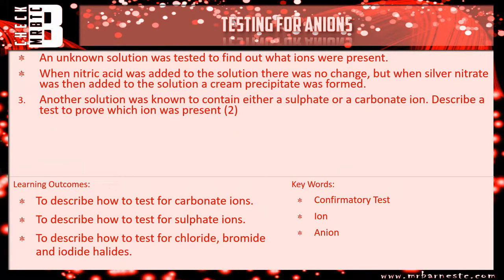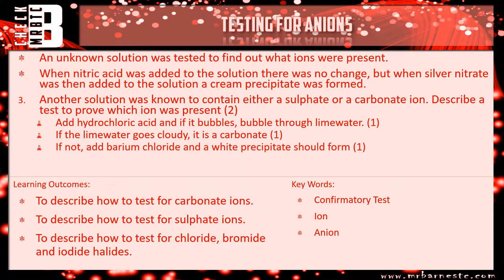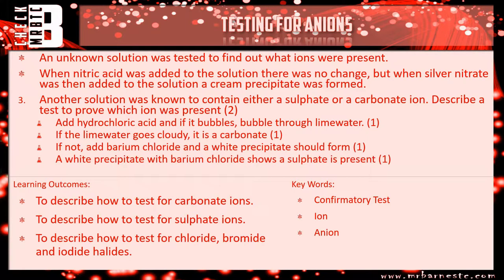On to question three. Another solution was known to contain either a sulfate or a carbonate ion, so what we could do is start off by adding hydrochloric acid. If it bubbles you're pretty sure it's going to be a carbonate, but what you need to do is bubble it through lime water — that gets you one mark. If the lime water goes cloudy it's a carbonate ion. Then talk about what happens if it doesn't: add in your barium chloride and you should get a white precipitate. If you get a white precipitate it proves you've got a sulfate.